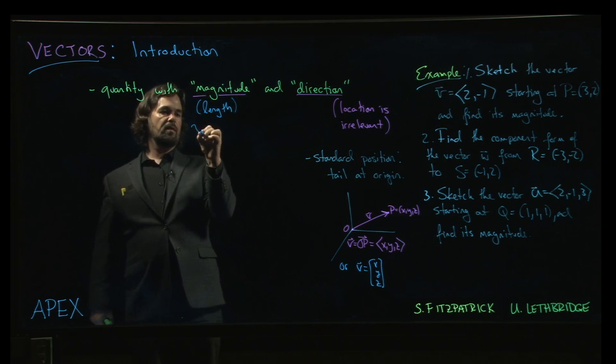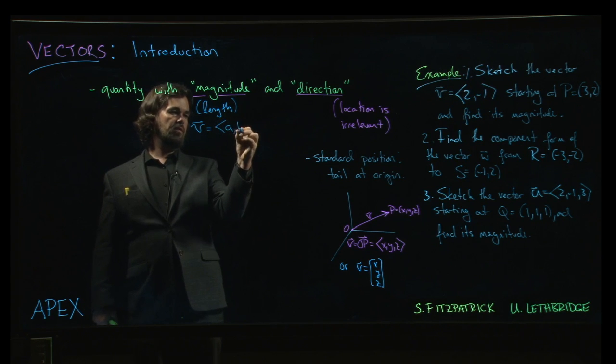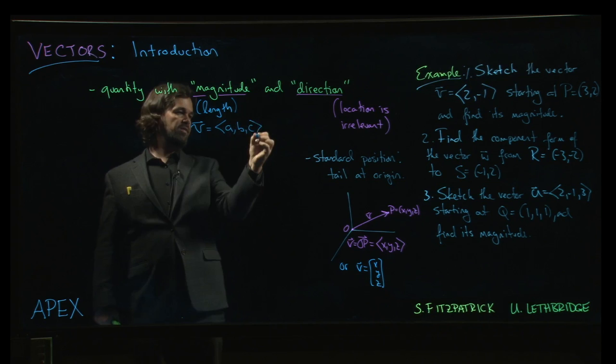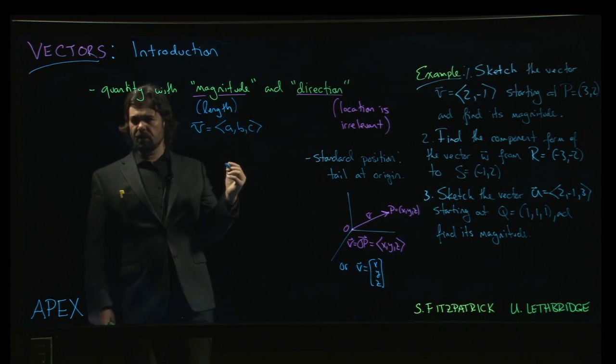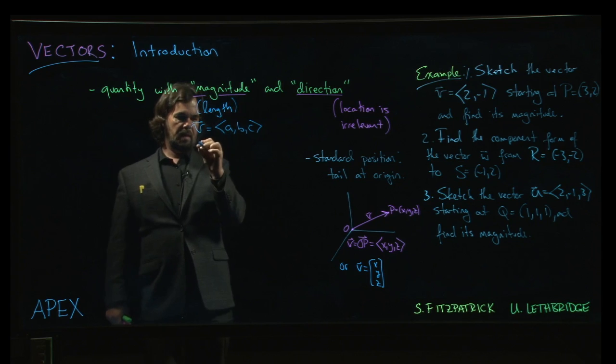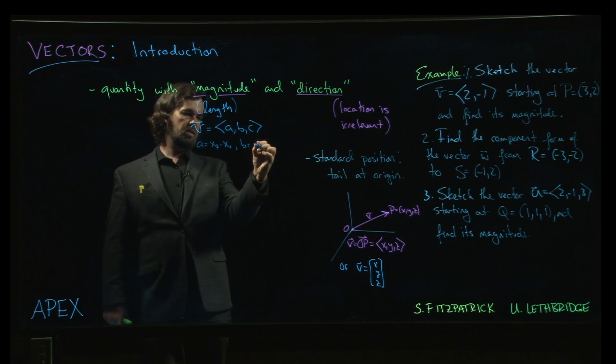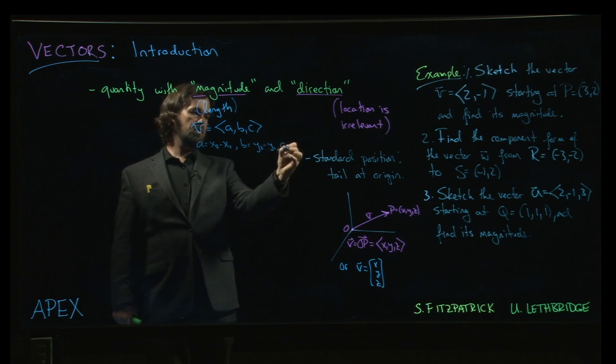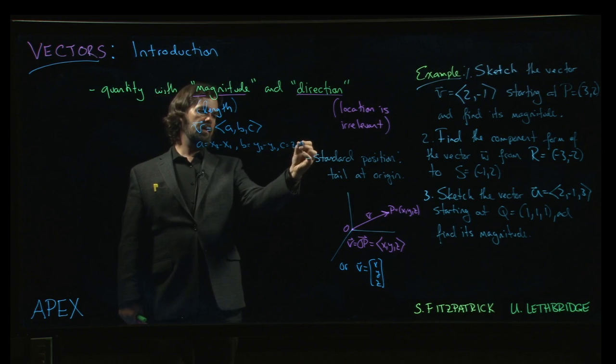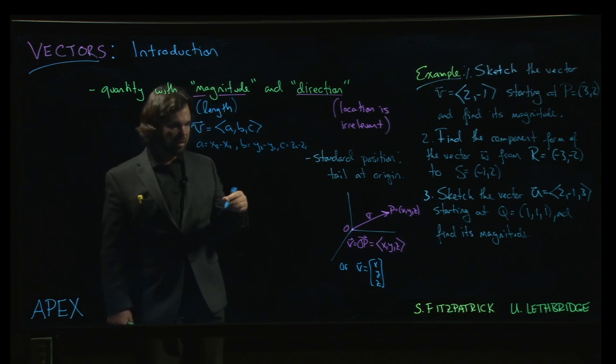And so if V is, say, again, let's do this in three dimensions, say A, B, C. Well, if this came from two points, P and Q, maybe A looks like X2 minus X1. B is, say, Y2 minus Y1. C is Z2 minus Z1. Usual way you set this up.